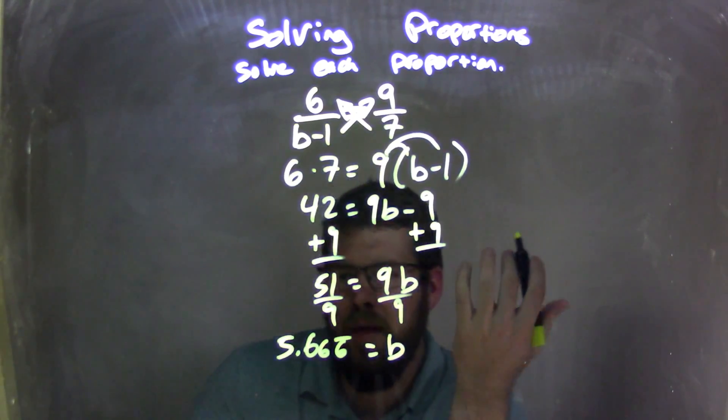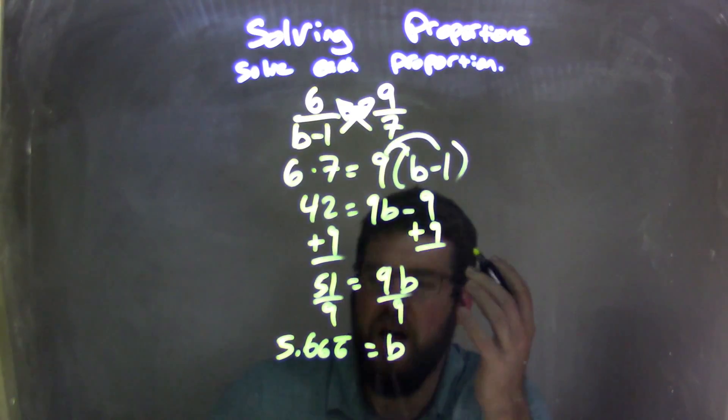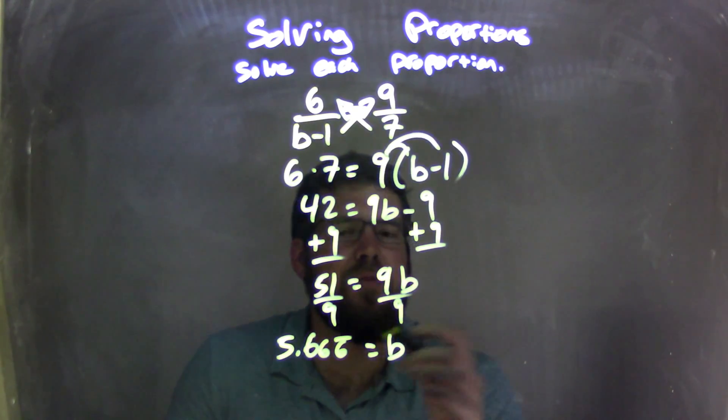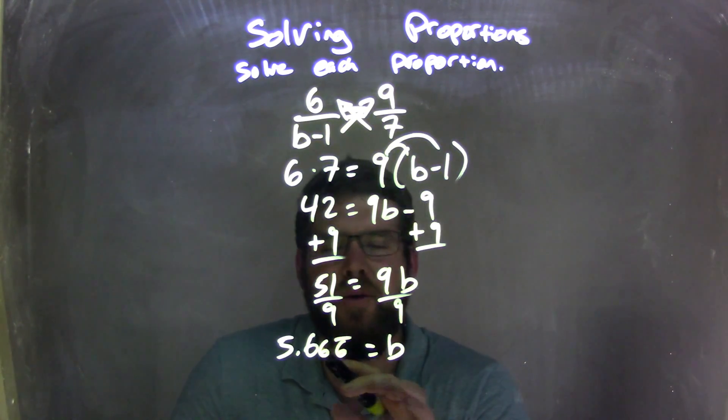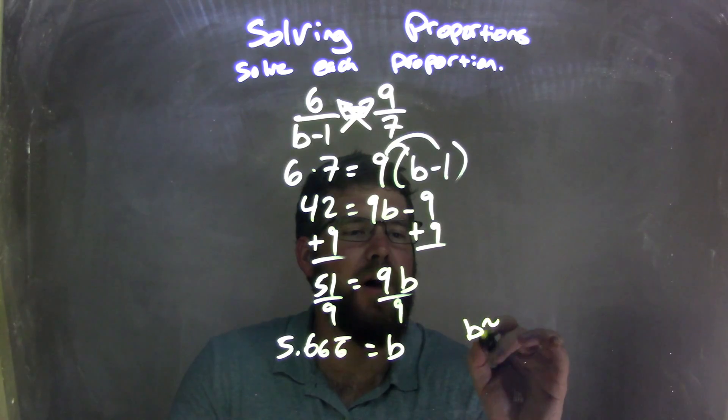So we can round that to the nearest, what is it, hundredth? Yeah, hundredth, that's good enough. So round to the nearest hundredth here, changing that 6, 1, 6 causes that one to round up.